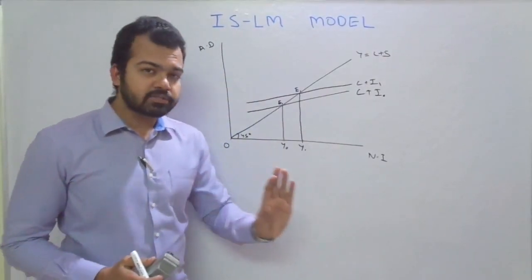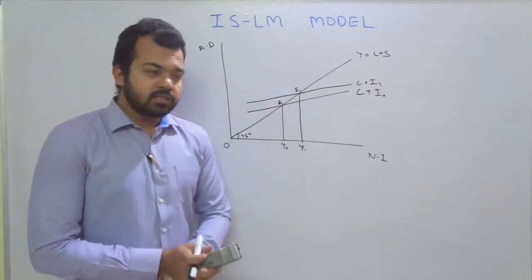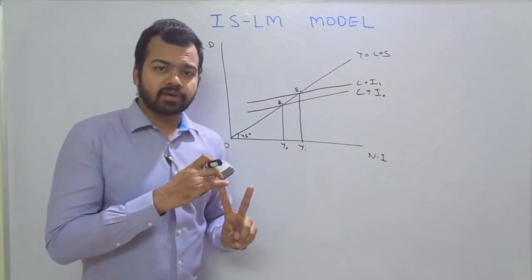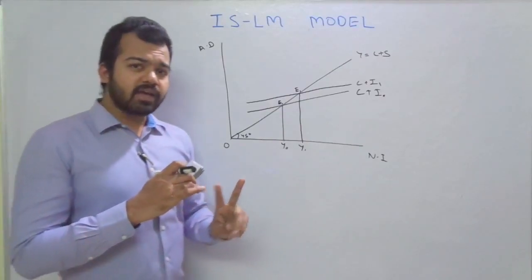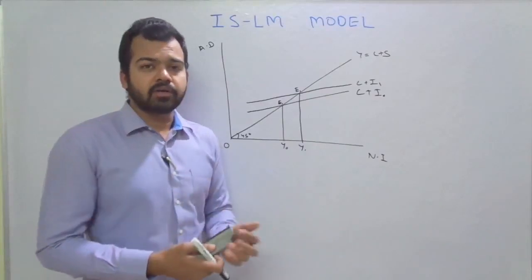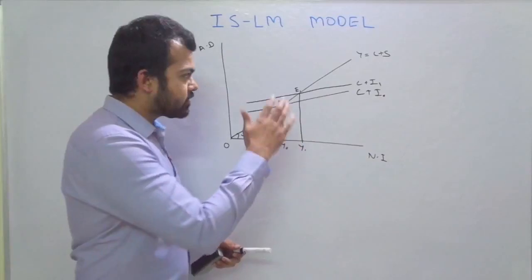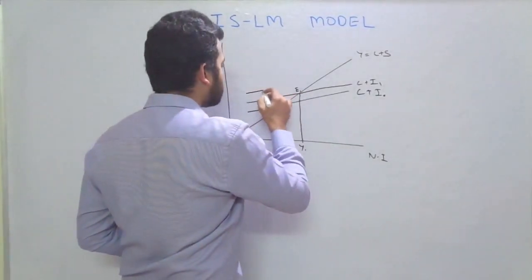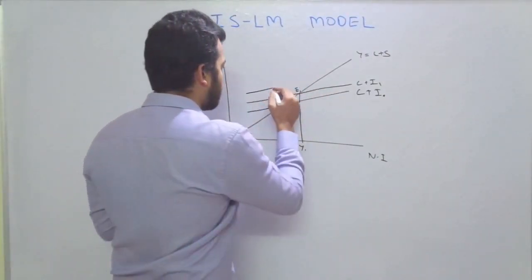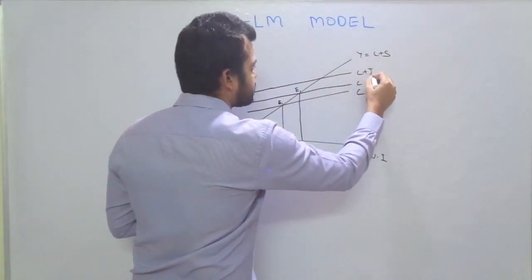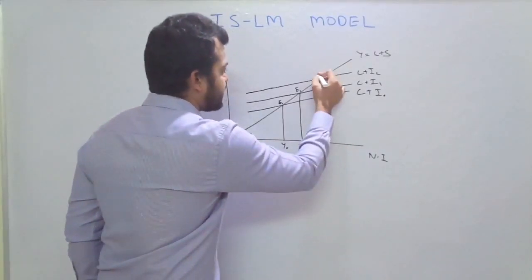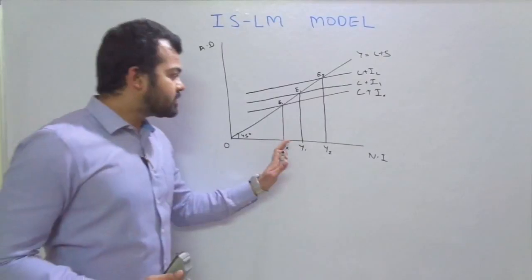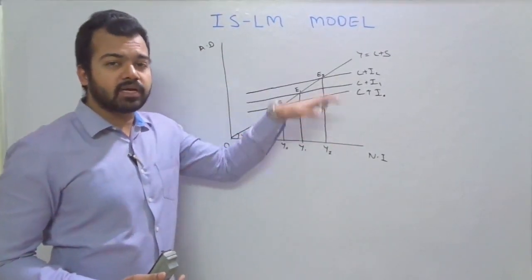To illustrate with a simple example: if one bank offers a house loan at 8% and another at 10%, people prefer the 8% rate. So whenever the interest rate is reduced, people prefer to invest. That is why reducing the rate of interest increases investment from I0 to I1 and national income also increases. The central bank can further reduce the rate of interest, giving equilibrium E2 at income Y2, and this process continues.